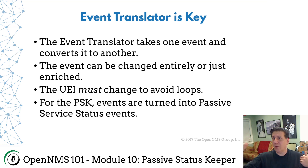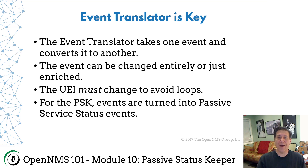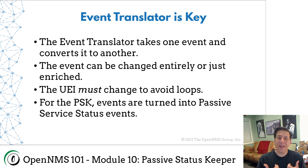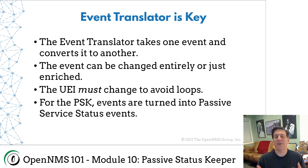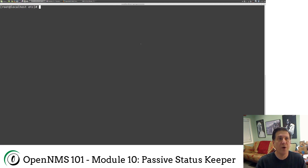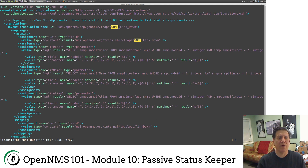Now, you can change the whole event or you can inherit a bunch of stuff from the original event. You have to change the unique event identifier — the UEI — otherwise you don't want to have a loop, otherwise it'll send it back in and come back in. For the Passive Status Keeper — the PSK — we actually take an event and turn it into a Passive Service Status Event. And we're going to show you how to do that. I'm going to jump back over here to my terminal window and edit the translator-configuration.xml file.